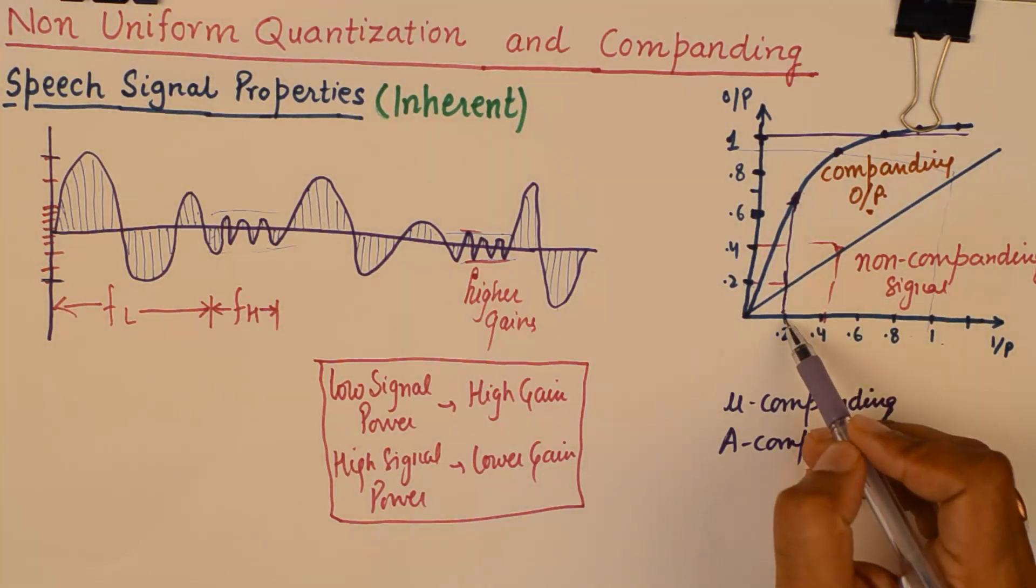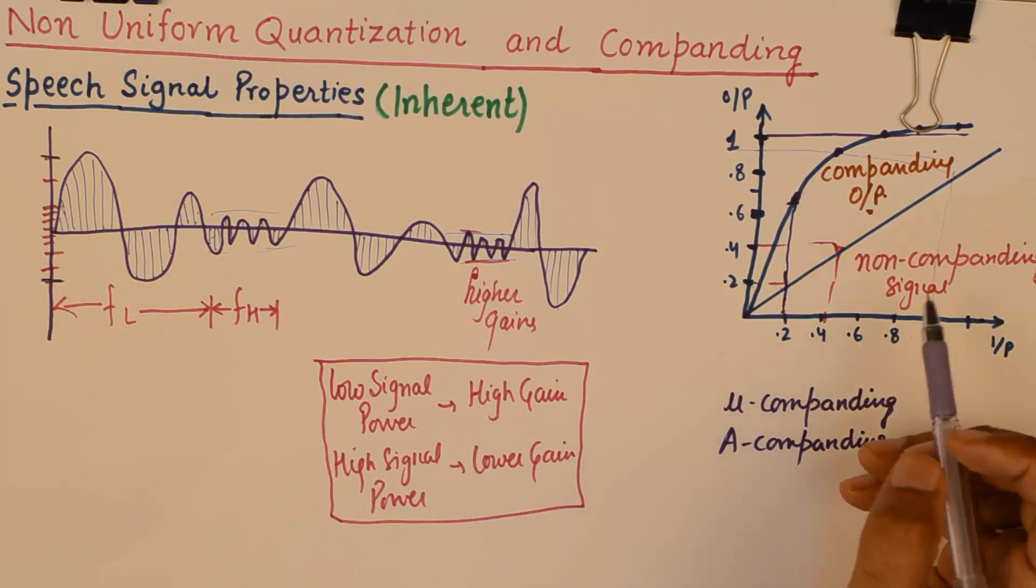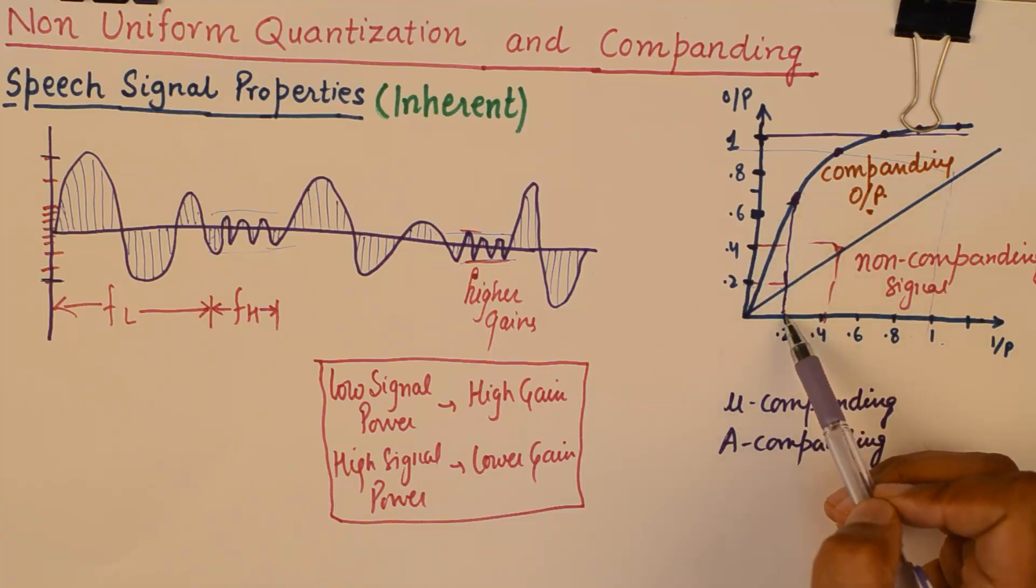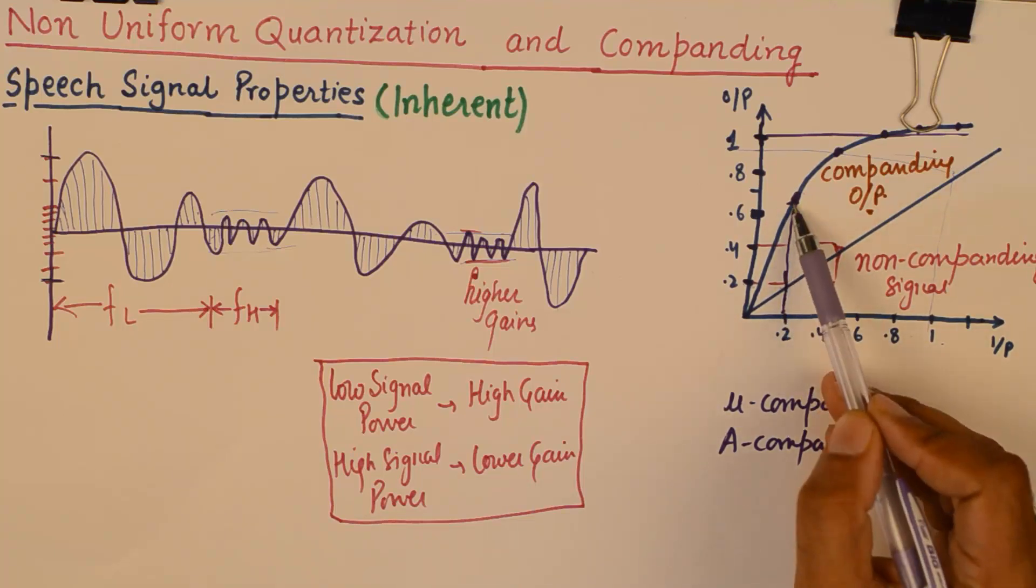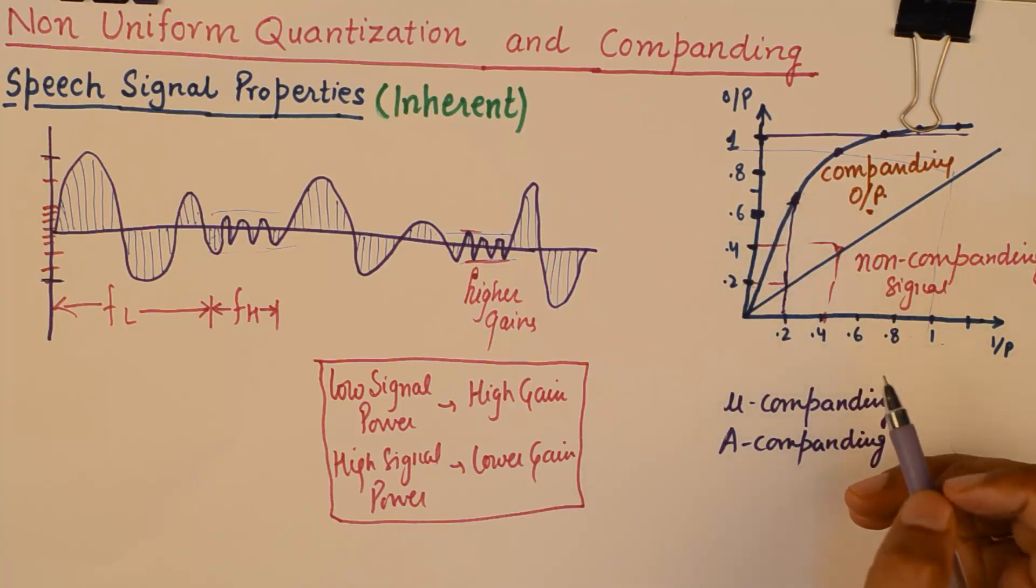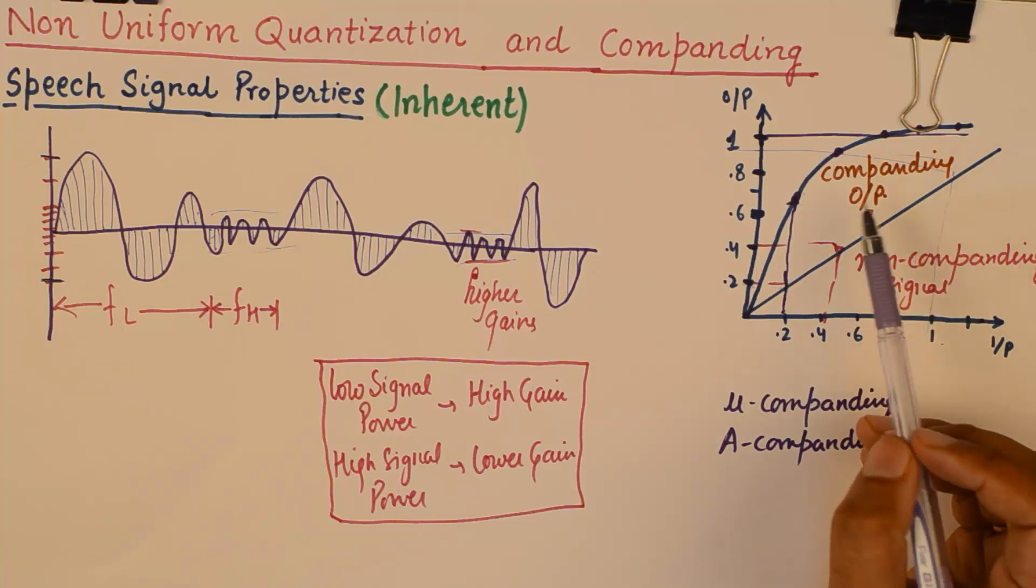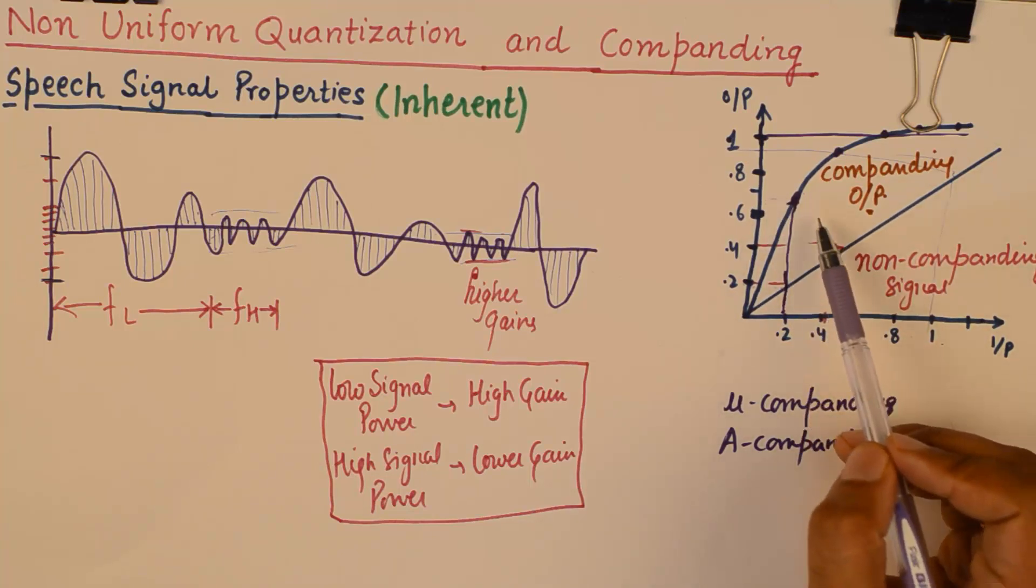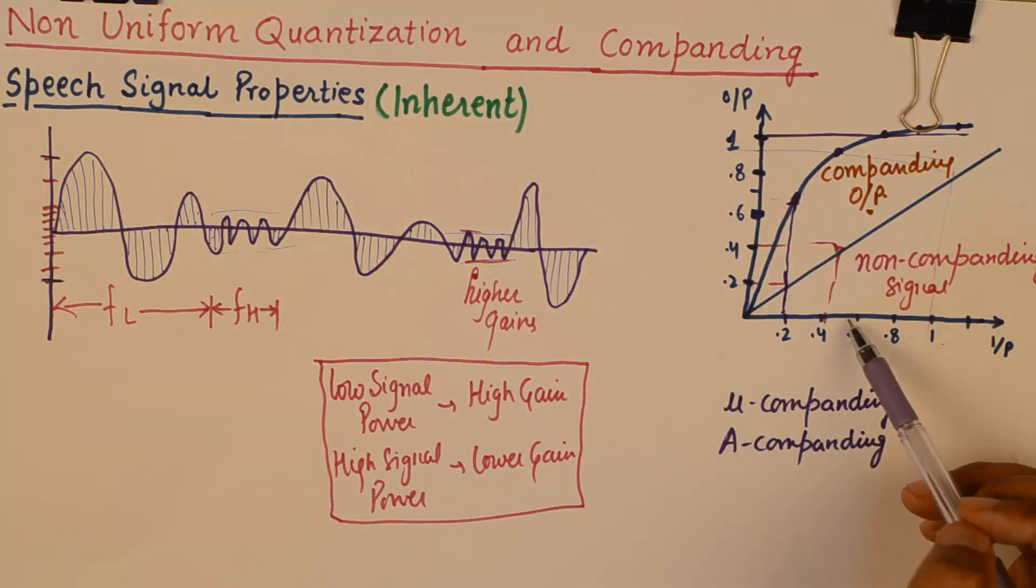So, if you look at this signal component which has a low power of let us say 0.2 decibels, this compander has boosted the signal to huge amounts and it has taken it to a level of 0.7 at the output. And it has made it comparable to other components in that spectrum.